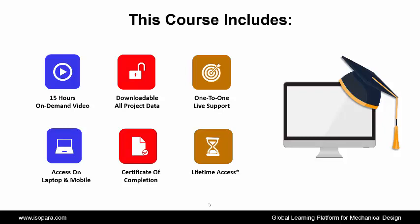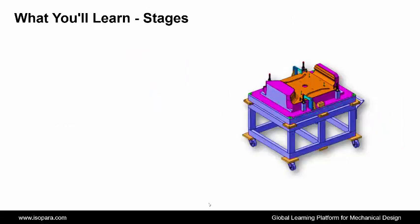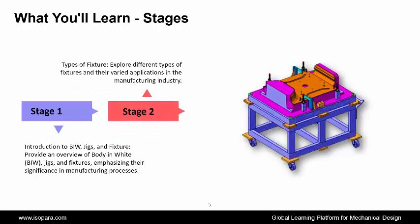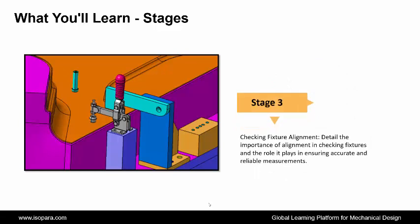Now, we see the number of stages of what you will learn in this course. First is Introduction to BIW, Jigs and Fixtures — providing an overview of body in white, jigs, and fixtures, emphasizing their significance in manufacturing processes. Second is Types of Fixtures — exploring different types of fixtures and their varied applications in the manufacturing industry. Third is Checking Fixture Alignment — detailing the importance of alignment in checking fixtures and the role it plays in ensuring accurate and reliable measurements.